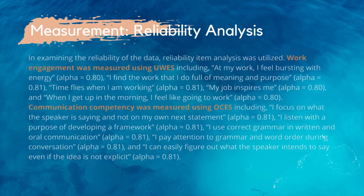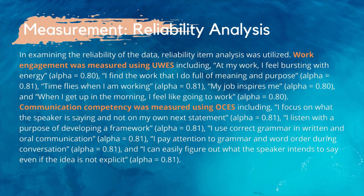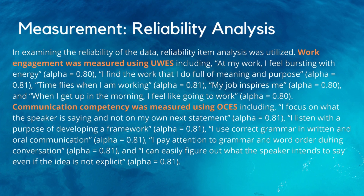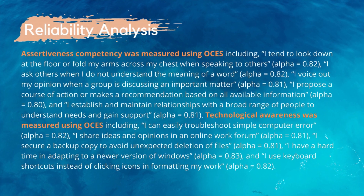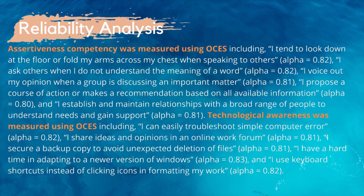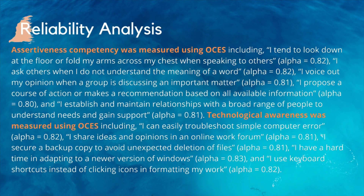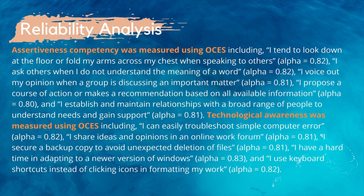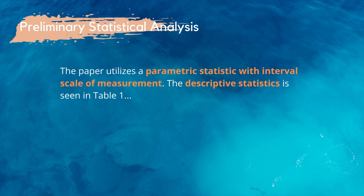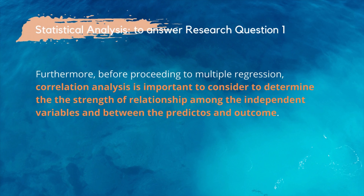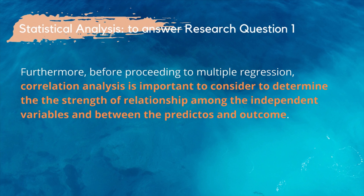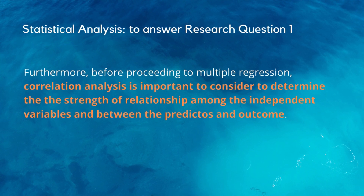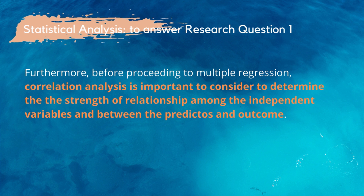The last part of the methodology is the explanation of the measurement tools to be used in answering the research questions. First is the reliability analysis, which refers to the fact that a scale should consistently reflect the construct it is measuring. You have to present that all items for each variable have passed the reliability analysis. You may also explain the parametric statistic with interval scale of measurement to present descriptive statistics. Make sure to explain the statistical analysis you use in answering each research question. For example, to answer research question 1, before proceeding to multiple regression, correlation analysis is important to determine the strength of relationship among independent variables and between predictors and outcome.